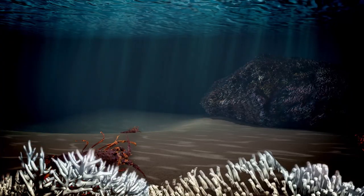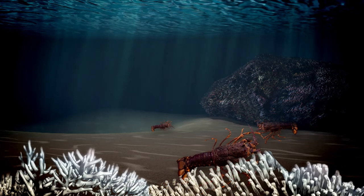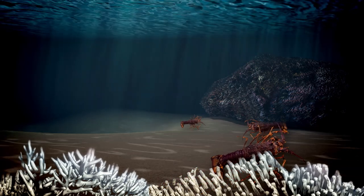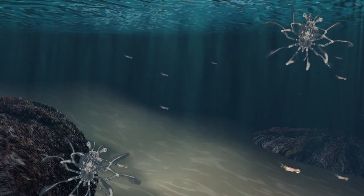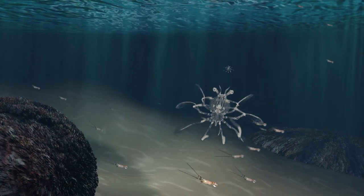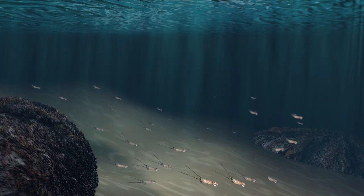However, warmer La Niña waters are generally beneficial for species such as the Western rock lobster, whose larvae ride the Lewin Currents southwards. In La Niña years, more lobster larvae settle to the ocean floor, meaning greater numbers are available to fisheries.